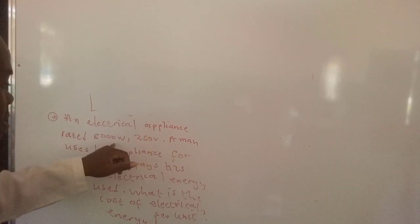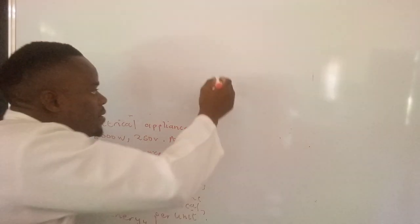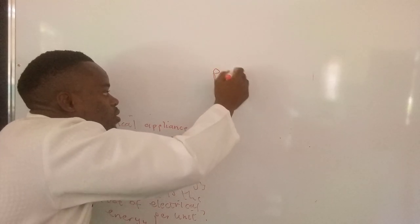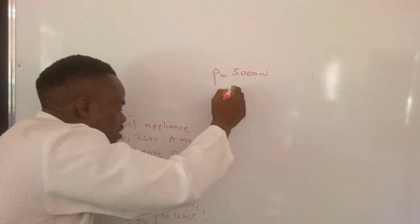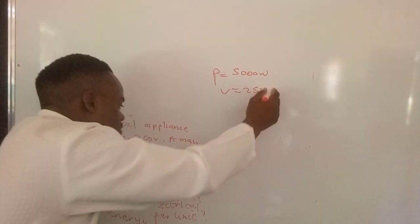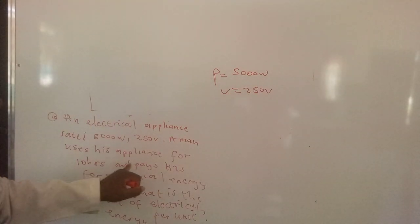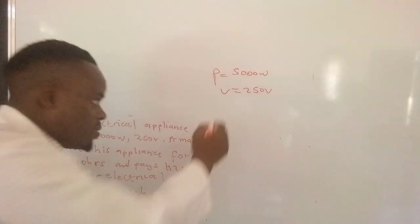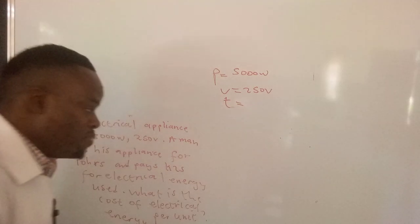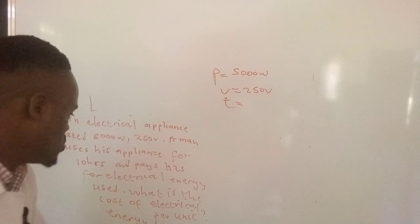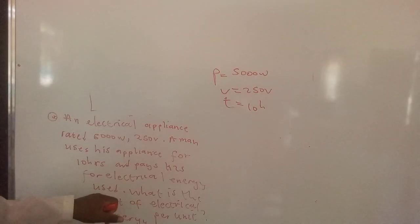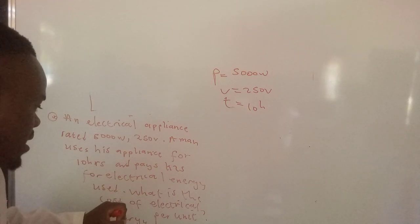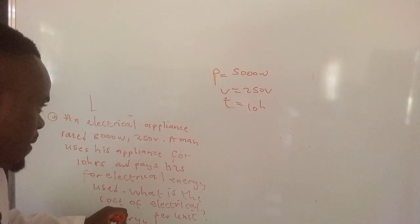Now here they're saying an electrical appliance rated 5000 watts. So what we have is power, 5000 watts, and then voltage is 250 volts. The man uses his appliance for 10 hours. The period of time within which it's used is equal to 10 hours. And then he pays 25 kwacha for electrical energy used.